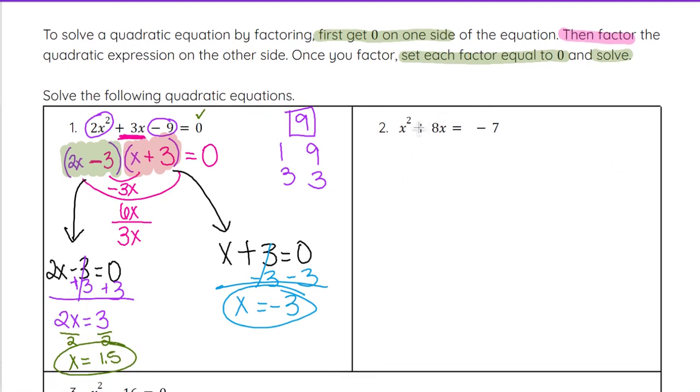Looking at number 2, we have a similar problem, except we don't have 0 on one side. So, we need to go ahead and add 7. By doing that inverse operation, that will get 0 on this right side. The 7 will not combine with anything directly on the left side, but we can write it in standard form. x² plus 8x plus 7 equals 0. And then we just factor that left side.